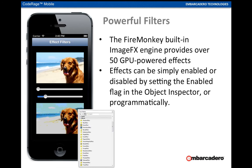During this session, we're going to cover how to use some of the powerful filters that FireMonkey provides. FireMonkey actually includes a built-in image effects engine with over 50 GPU-powered effects, ranging from shadow effects, blur effects, sepia effects, tune effects, etc. The effects can be simply enabled or disabled by checking the enabled flag for the component in the object inspector, or also programmatically.